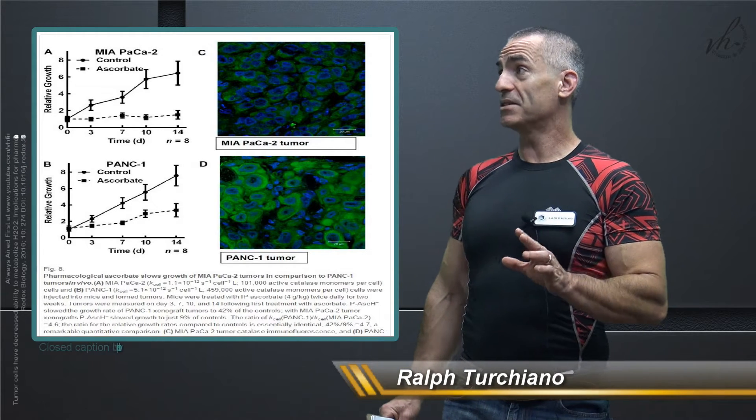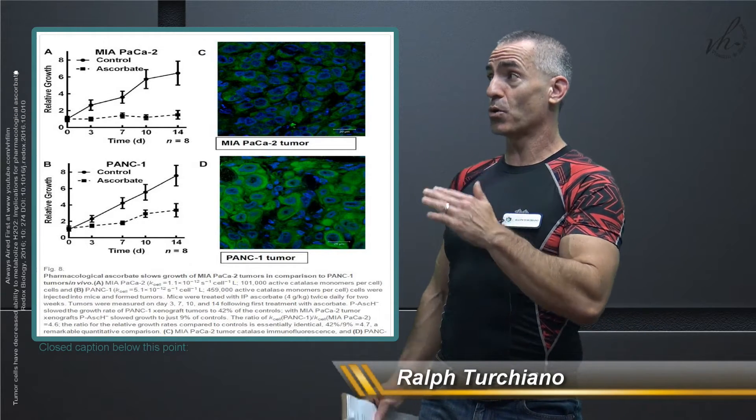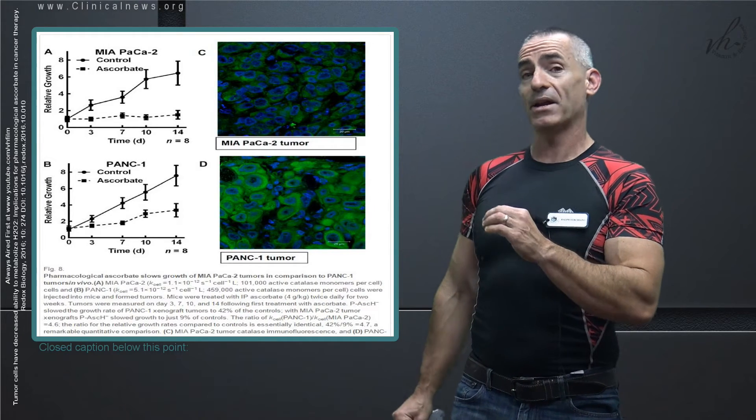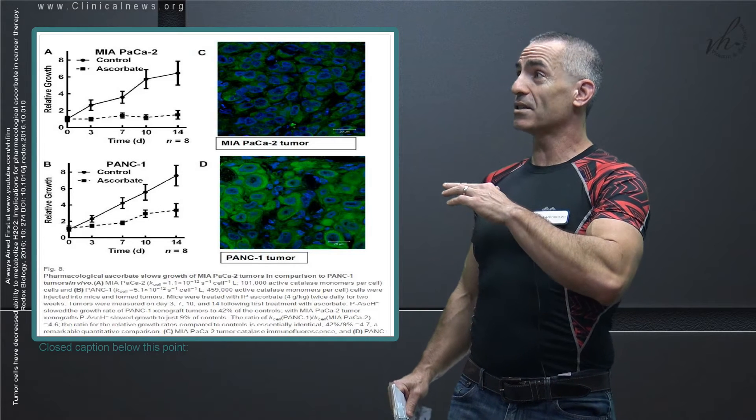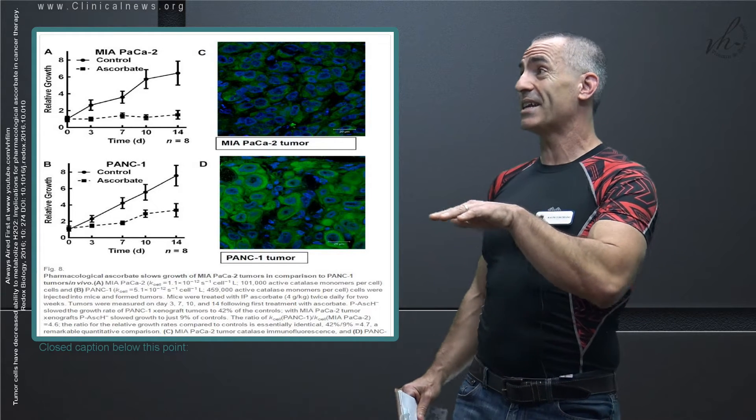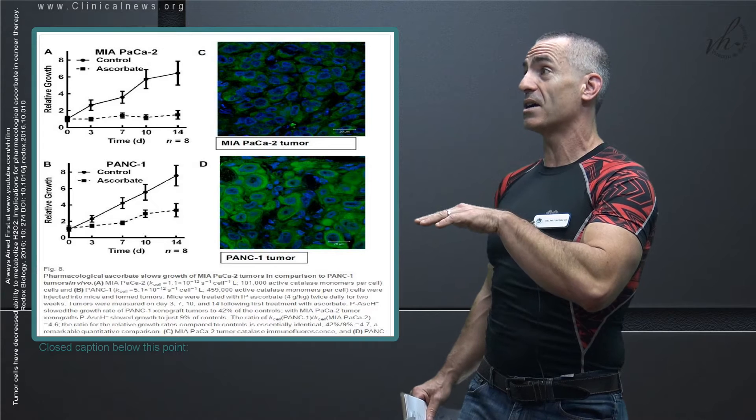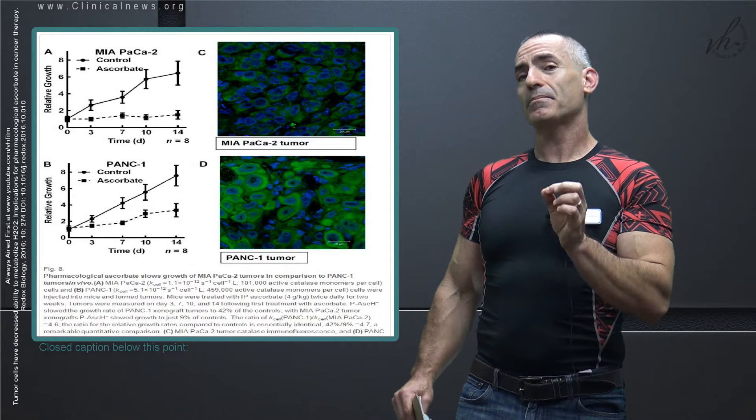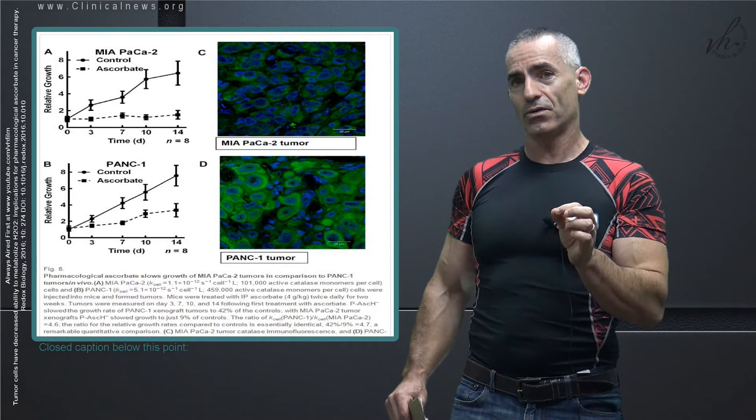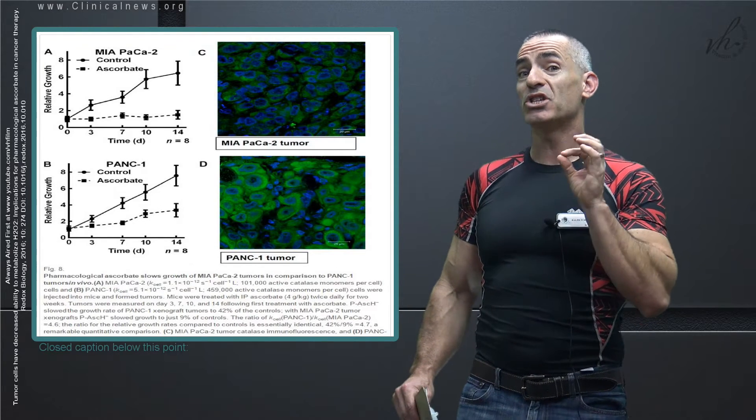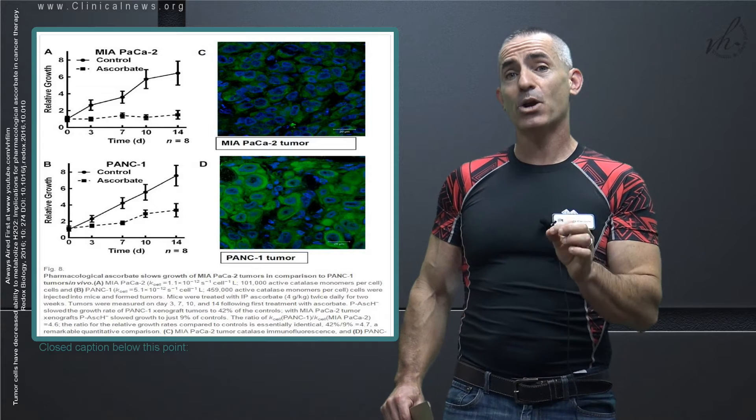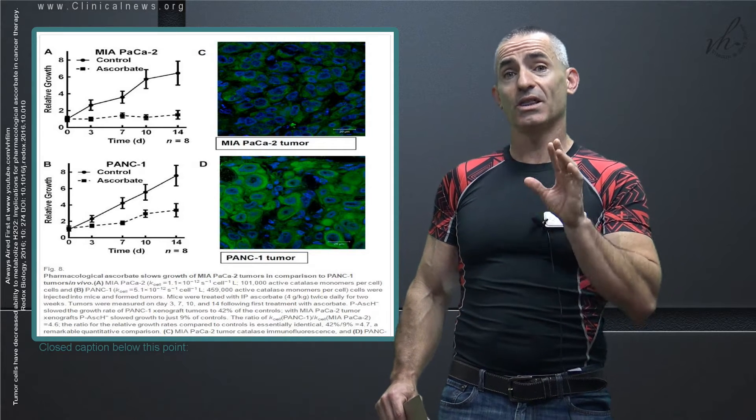Now what happens is you notice you see a control group which tends to go straight up and you see the ascorbate otherwise known as pharmacological vitamin C. You notice how one tends to rise a little bit and the other one pretty much stays steady across the 14-day period of time.